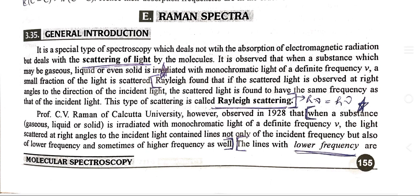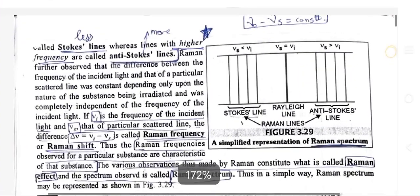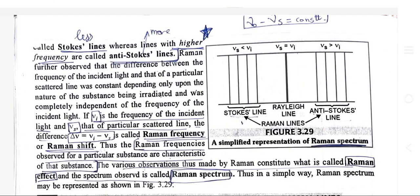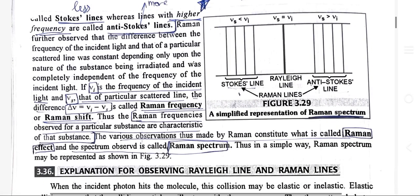The scattered light contains lines not only of the incident frequency but also of lower frequency and sometimes of higher frequency as well. The lines with lower frequency are called Stokes lines, whereas lines with higher frequency are called anti-Stokes lines. Raman further observed that the difference between the frequency of the incident light and that of a particular scattered line was constant, depending upon the nature of the substance being irradiated, and was completely independent of the frequency of the incident light.